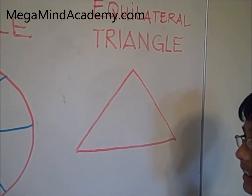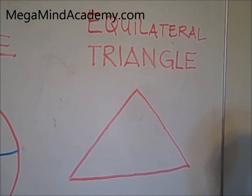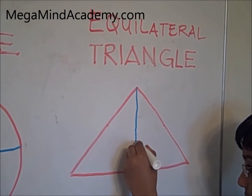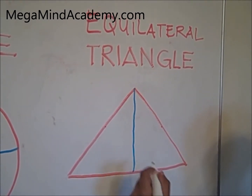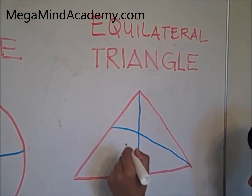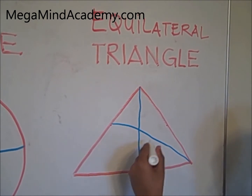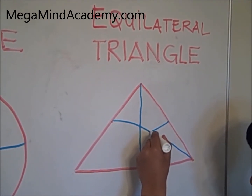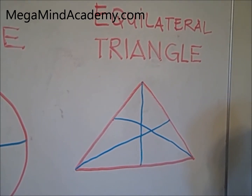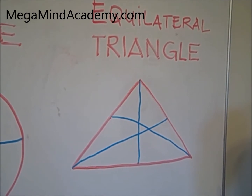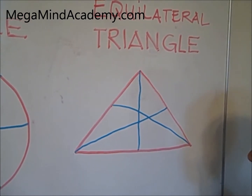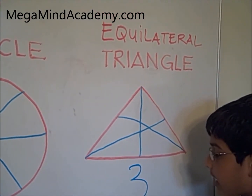The last one is an equilateral triangle. This is a line of symmetry — it divided the figure into two halves equally. This is another line of symmetry — it divided the figure into two halves equally. And this is another line of symmetry — it divided the figure into two halves. The equilateral triangle has three lines of symmetry.